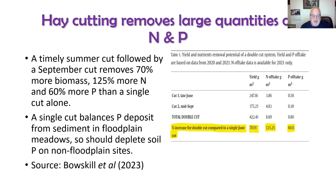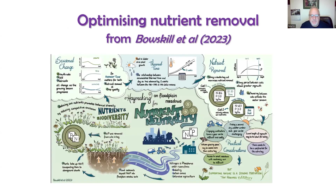Their study in Oxfordshire found that a timely mid-summer cut — basically the last week of June — followed by a cut in September removes a great deal of the excess nutrients taken up by plant growth. They were particularly interested in meadows on floodplains heavily covered by nutrient-rich silt. The optimal approach for maximum nutrient removal was a cut in late June followed by another in September with the hay taken away. We're further north, so the optimal time for the first cut would be more like early to mid-July.